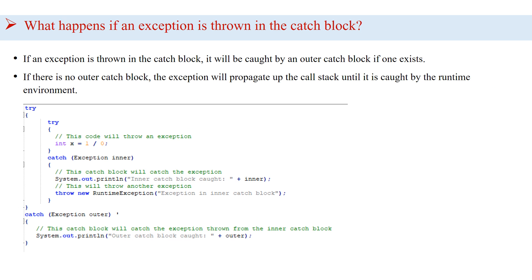Next question is: what happens if an exception is thrown in the catch block? If an exception is thrown in the catch block, it will be caught by an outer catch block if one exists. And if there is no outer catch block, the exception will propagate up the call stack until it is caught by the runtime environment.